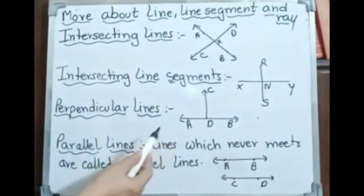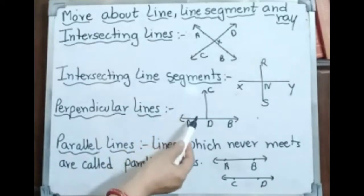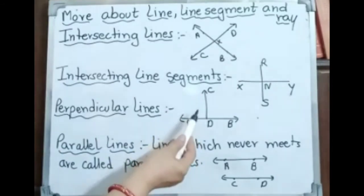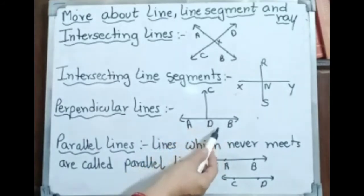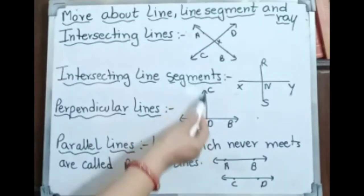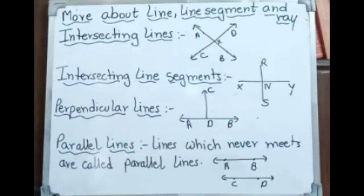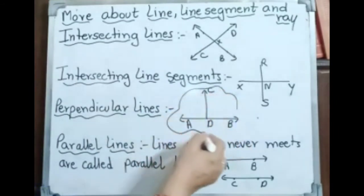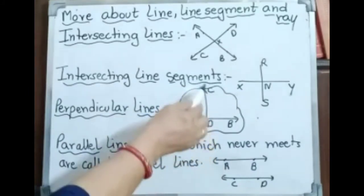Perpendicular lines: when a vertical ray, line, or line segment meets a horizontal ray, line, or line segment, perpendicular lines are formed. These types of lines are called perpendicular lines. It may be a ray, a line, or a line segment — when they meet at a right angle like that, it is called perpendicular lines. For example, line CD is perpendicular.